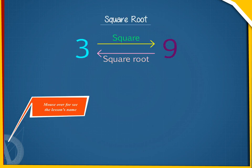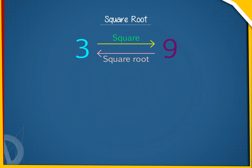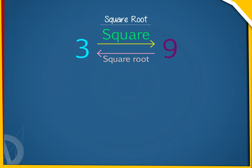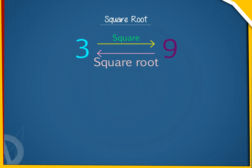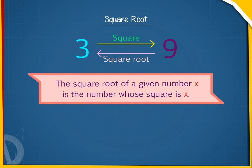Square root. Finding the square root is the inverse operation of squaring. 3 squared is 9; the square root of 9 is 3. The square root of a given number x is the number whose square is x.